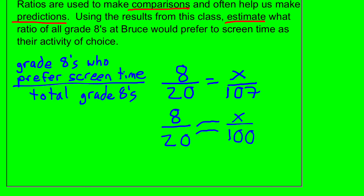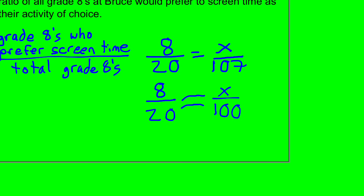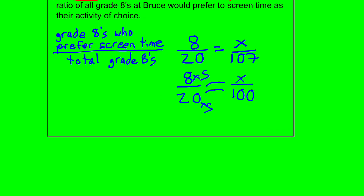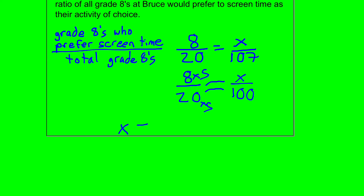What we have here are equivalent ratios — two ratios that make the same comparison but with different amounts. We recognize that 20 times 5 equals 100, and since they're equivalent, we do the same to the top: X equals 40. So out of the total population of grade 8s at Bruce Middle School, we could estimate that about 40 students would want screen time.